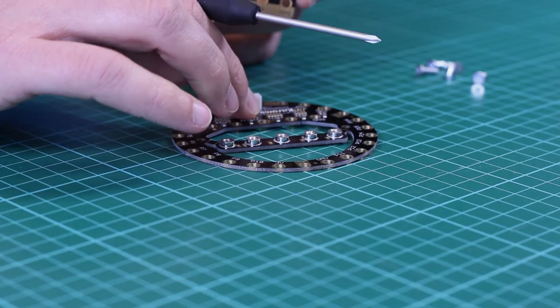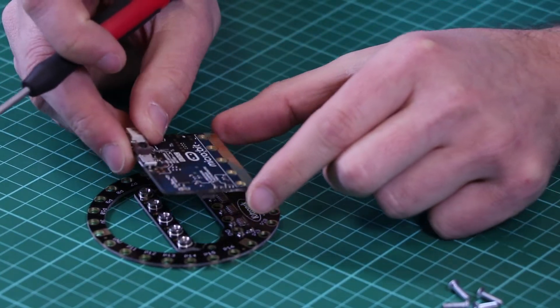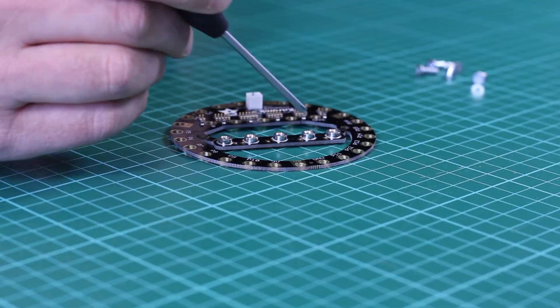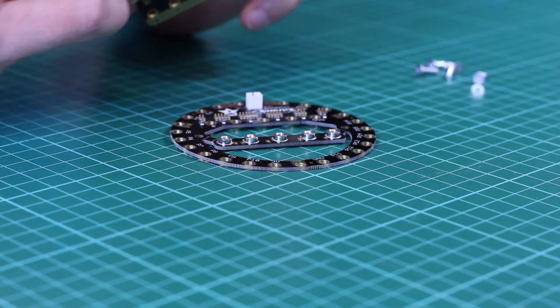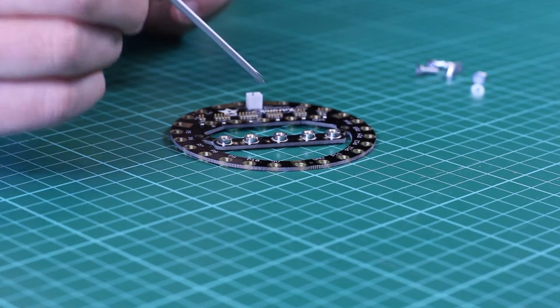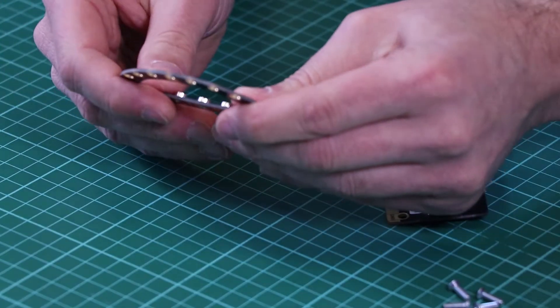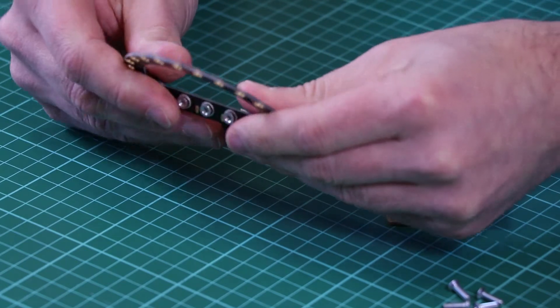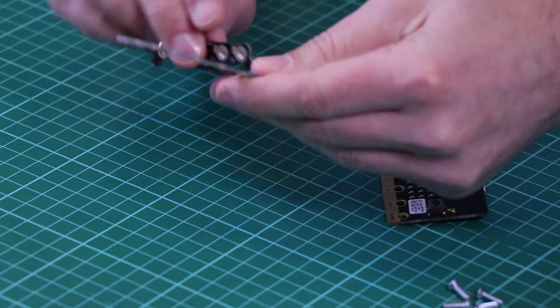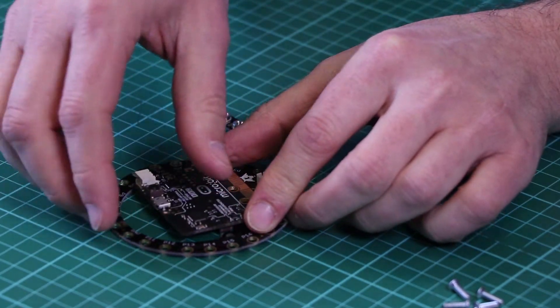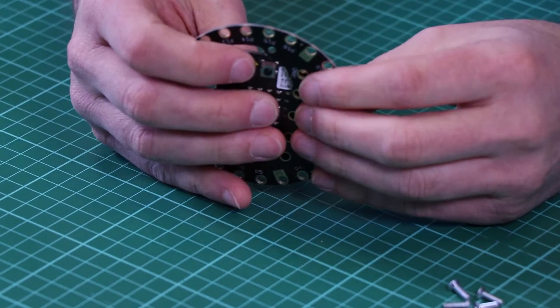The micro:bit is clamped to them using this mounting bar. To do this, we first need to remove the mounting bar from the Clip Halo itself, so the micro:bit will sit here like this.